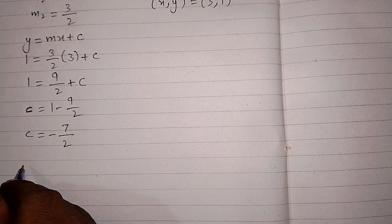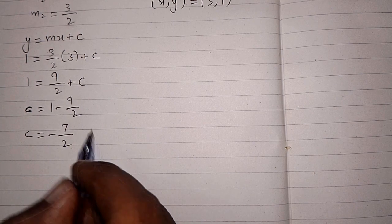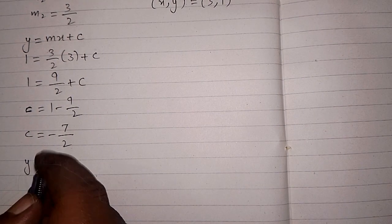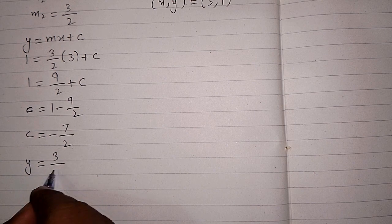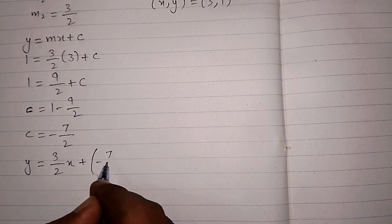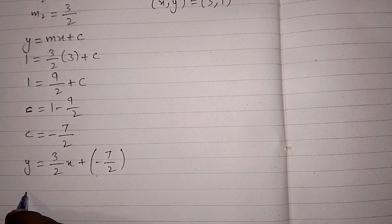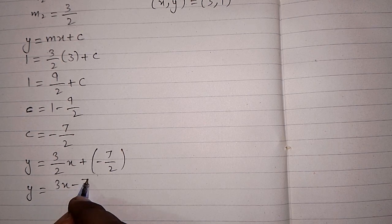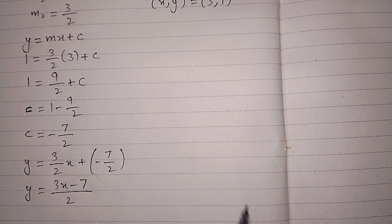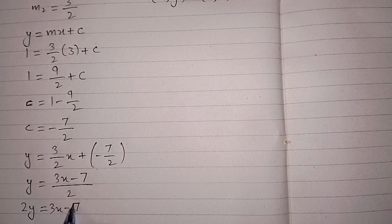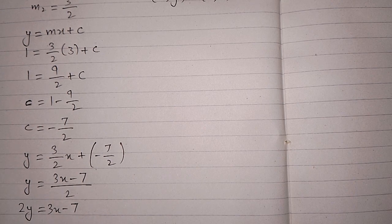Now we substitute the values of m and c into the equation: y = (3/2)x + (-7/2). This gives y = (3x - 7)/2, which can be written as 2y = 3x - 7. This is the required equation of the straight line.